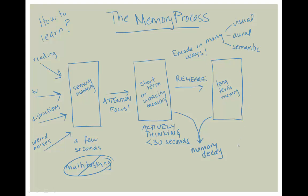Diversifying the encoding process is essential to retrieval, which is the process of actually remembering information when you want to. The more ways you are able to encode information, the more ways you can retrieve information. So when you're taking a test and need to retrieve something for a multiple choice question or an essay question, you can, because you've diversified your encoding process and also rehearsed the material.